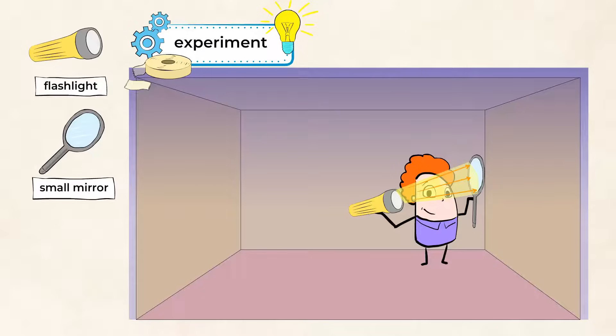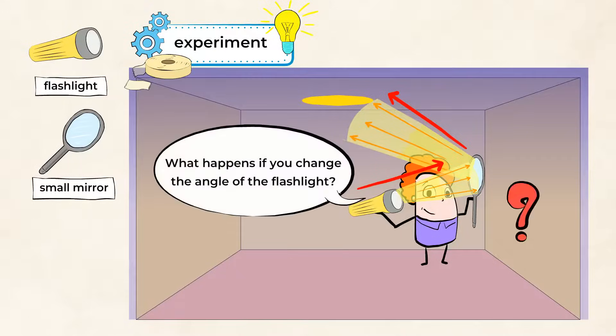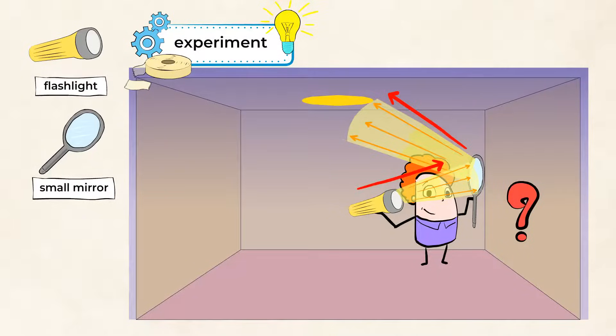Well, it hits the shiny surface of the mirror and it's reflected onto another surface. The light travels in a straight line from the light source, the flashlight in this case. It hits the mirror and then is reflected in a straight line opposite of the original beam of light onto the wall. And you can try holding the flashlight at different angles too. What happens if you change the angle of the flashlight? Does the angle of the reflected light change as well?